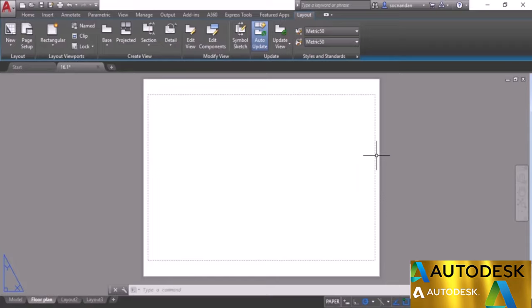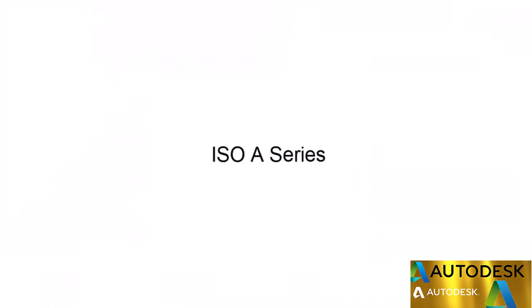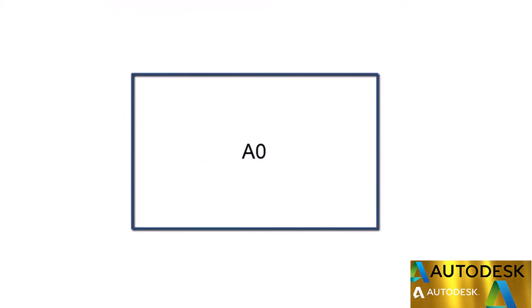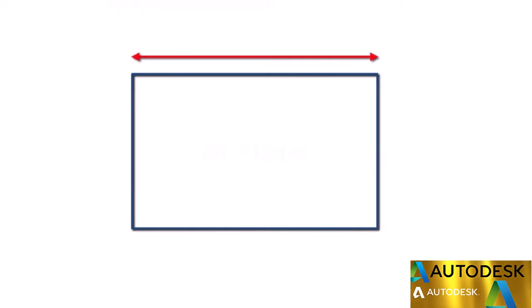There are many conventions of paper sizes. The most popular is the ISO A series — A0, A1, A2, A3, A4, and so on. These are commonly used in drawing offices. The biggest paper size in ISO A series is A0, which has an area of one square meter. If you divide the length by the width, the result equals root 2, or 1.414.